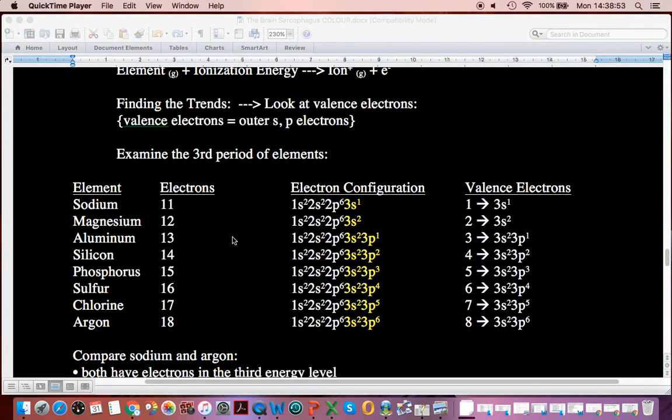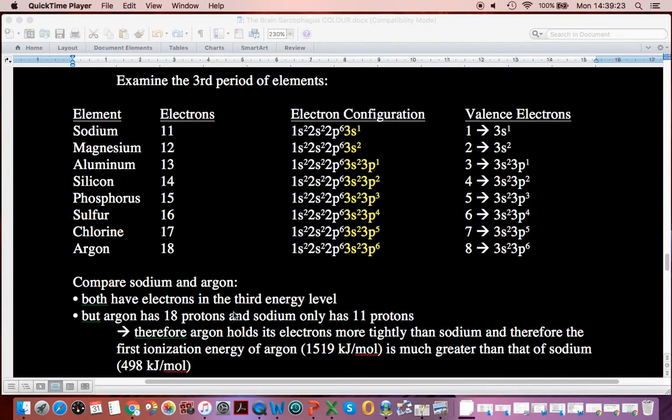So we look at the third period. Well, we have different numbers of electrons, but we also know we have different numbers of protons. So for sodium, we have 11 protons. By the time we're down to argon, we have 18 protons. So what we expect to happen is, as we go to the right, the ionization energy is going to get bigger because we have more protons holding these electrons.